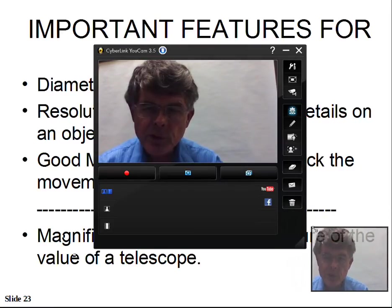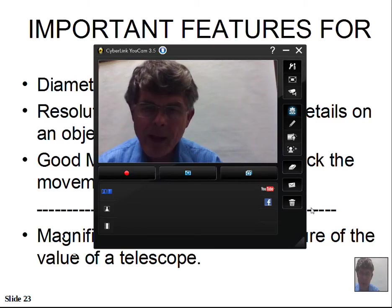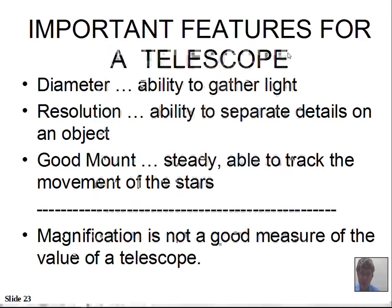Sometimes it's useful to compare one telescope to another, and we have some measures of comparison that we'll talk about here. Important qualities for a telescope would first be the diameter. If you're going to buy a telescope, the diameter of the objective — either the lens or the mirror that gathers light — that's a key parameter.